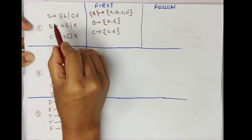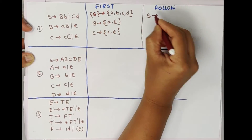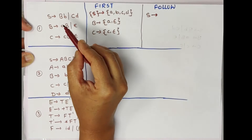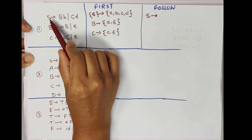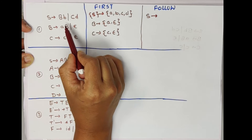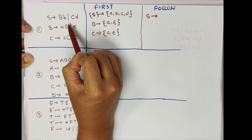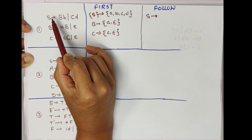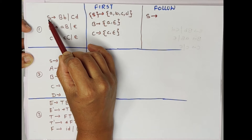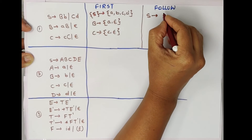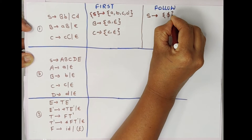Now we will find FOLLOW of S. For FOLLOW, we check where S is present in the productions. Right now, no variable S is present on the right-hand side. But S is the starting symbol, so in FOLLOW(S) we will add dollar. So FOLLOW(S) = {$}.